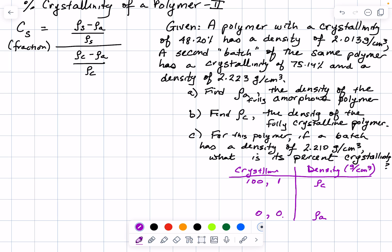And then for everything in between, we have different values. In this particular problem, we have a density of 75.14% with density 2.223, and another at 48.2% with density 2.013. In part C, the density of the sample is 2.210, and I deliberately put it between these because I notice it is between those, so we're expecting that density to be somewhere between 75 and 48 percent.